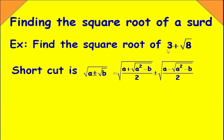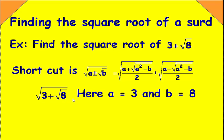Now, in our problem, we have to find the square root of 3 plus root 8. That is, square root of (3 + √8). Comparing with the formula, here a equals 3 and b equals 8, and we have a plus sign.